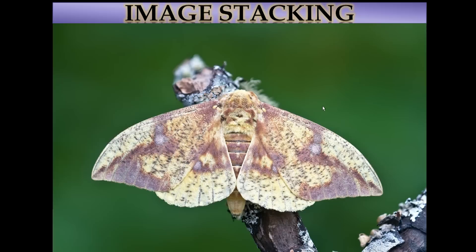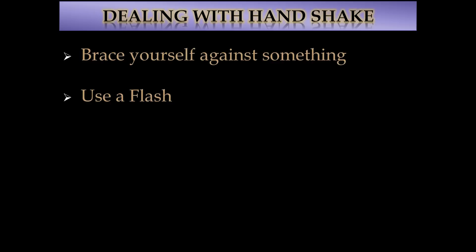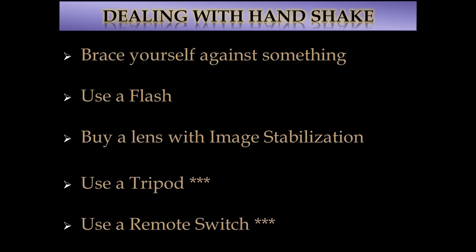That covers one of the biggest challenges to macro photography. Now let's move on to dealing with handshake. The most common way is to brace yourself against something. Another way is to use a flash — using a flash allows you to increase your shutter speed to 1/250 or whatever, which stops the action quickly, so whatever shaking you do is minimized by the fact your shutter opens and closes so fast. There are also some lenses that come with image stabilization, which can help in regular photography — it's a little dubious for macro, to be honest, but it can help a little. In my judgment, the way to deal with handshake is to simply not use your hands — don't hand-hold your camera. Use a tripod and a remote switch.